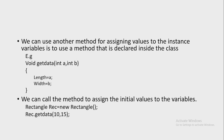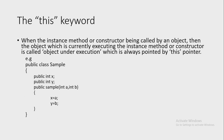We can call this method to assign initial values to the variables. An object of the Rectangle class, rec, is created using the syntax new Rectangle(). Then, using this object, we call the method: rec.getData(10, 15), where 10 and 15 are the parameter values.